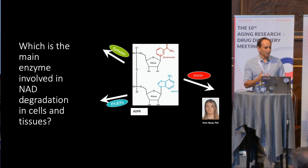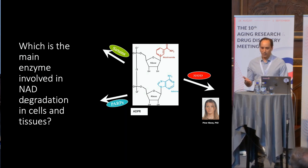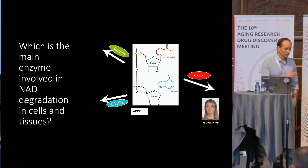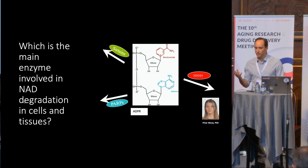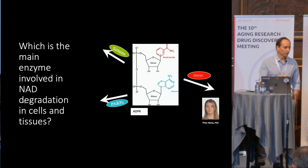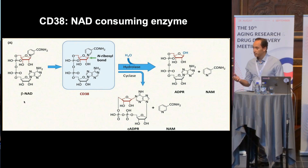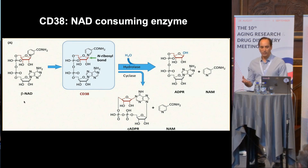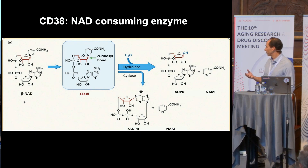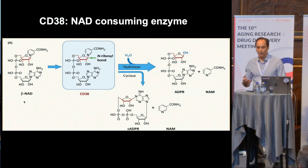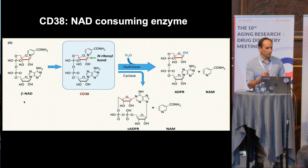CD38 is an enzyme mostly found in immune cells and also present in endothelial cells. There's an important caveat: most of your NAD is intracellular, but this is an ectoenzyme — so there's actually a topological paradox. We've been working with this enzyme for a very long time because it generates second messengers that regulate intracellular calcium. NAADP is one we discovered when I was a PhD student; it also generates cADPR. But its main function is to destroy NAD — to generate one molecule of second messenger, it will use 100 molecules of NAD.